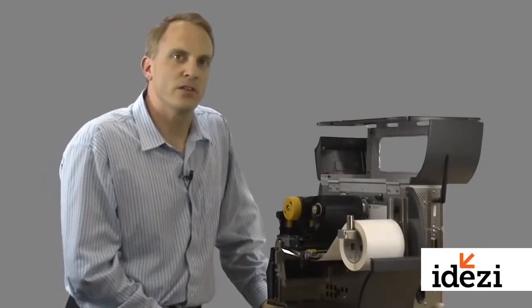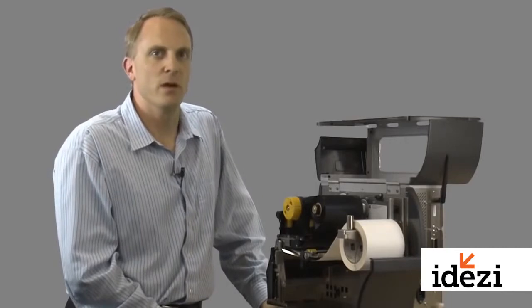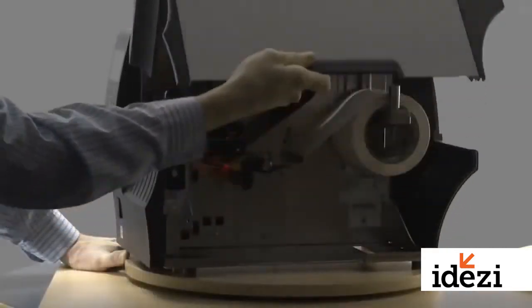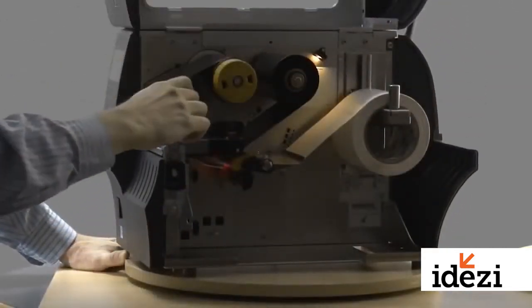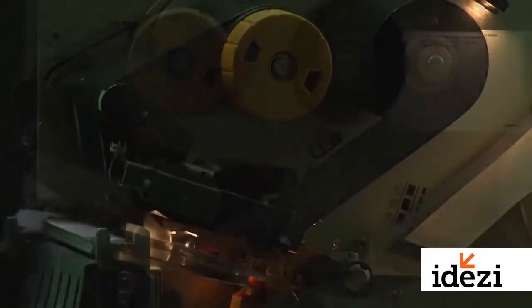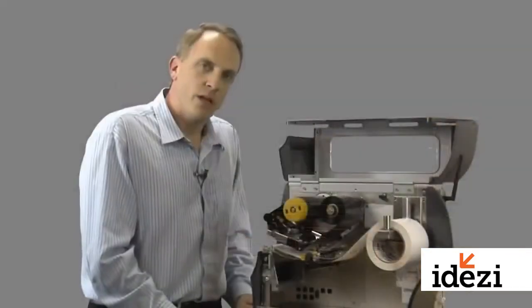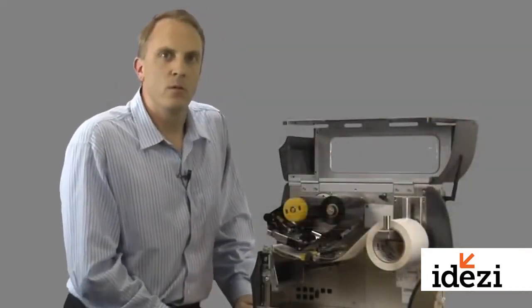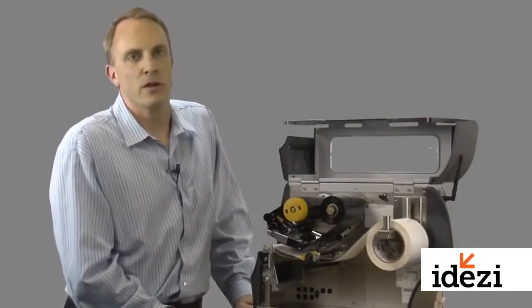The ZT400 has also greatly advanced the ease of use via a much improved user experience. The printer has lighted media and ribbon paths, controlled by the opening and shutting of the printer door. The new flip-up side loading mechanism provides efficient media and ribbon loading, while eliminating potential ribbon wrinkle startup issues.